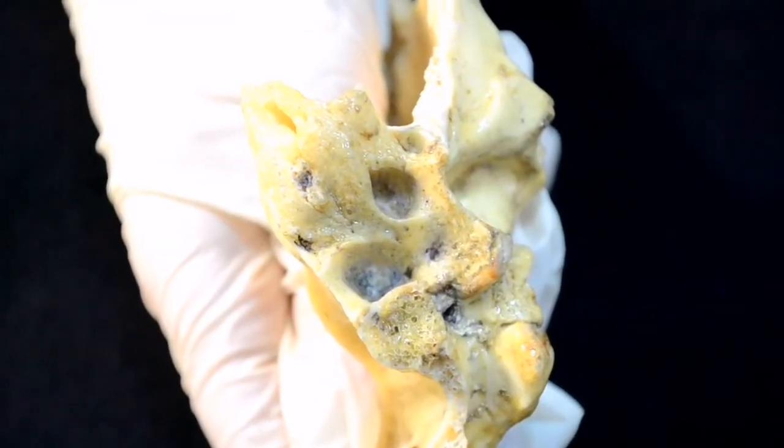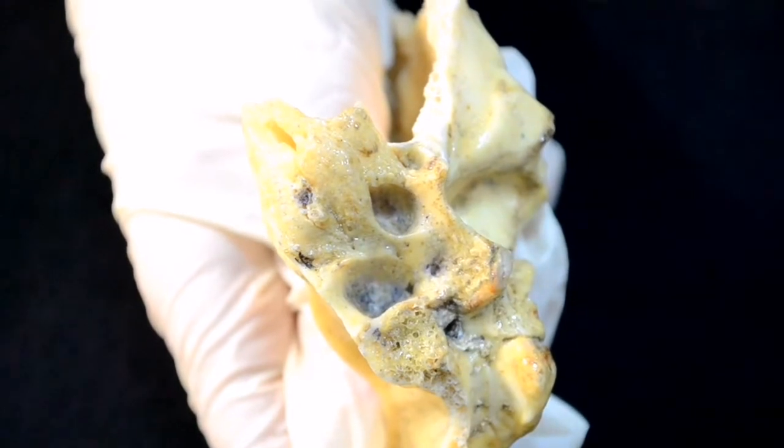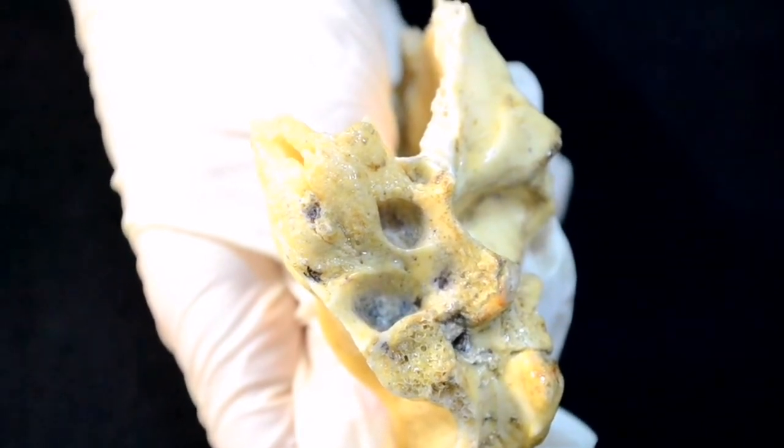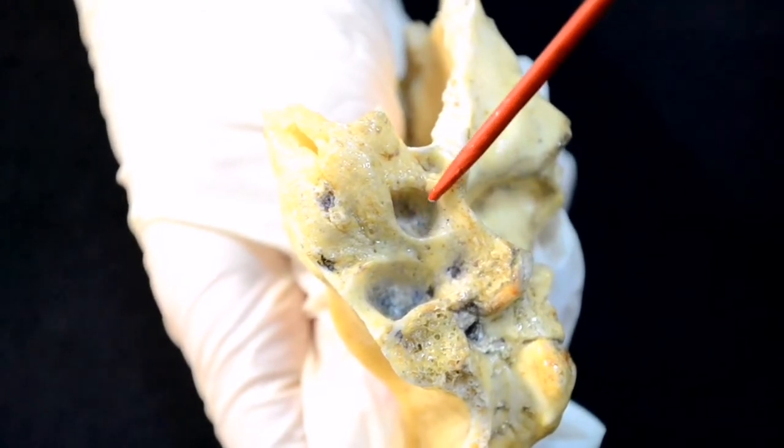Canals of the temporal bone. Canalis caroticus begins by foramen caroticum externum on the lower surface of the pyramid.